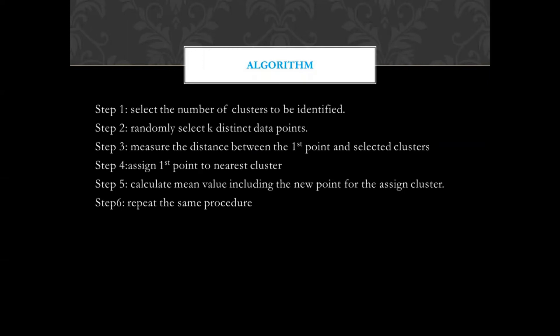This is the algorithm with six steps. Step 1: select the number of clusters to be identified — k represents the number of clusters. Step 2: randomly select k distinct data points as centroids. Step 3: measure the distance between each point and the selected clusters. For example, with three clusters, find the distance from the first point to cluster 1, cluster 2, and cluster 3.